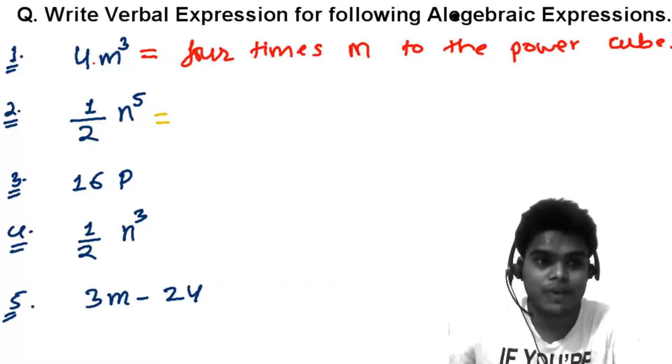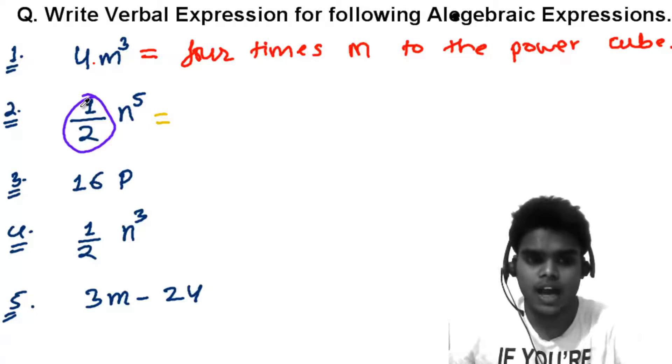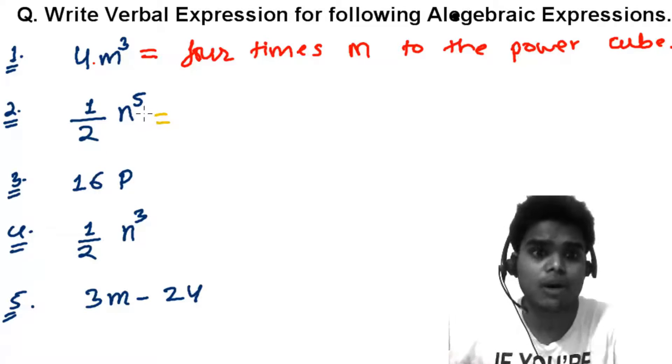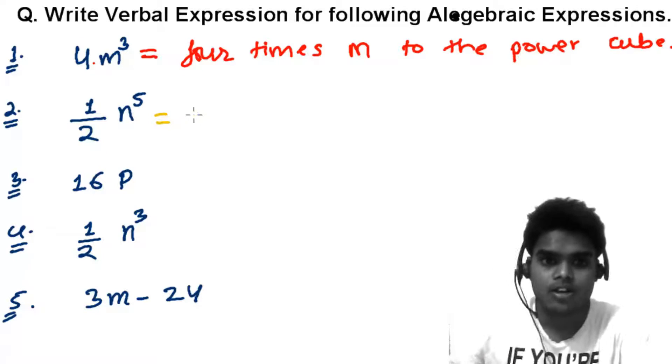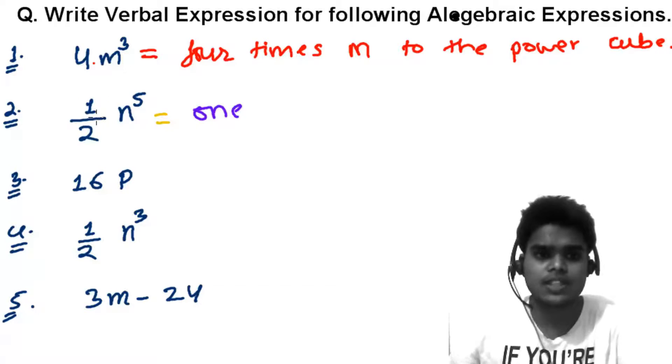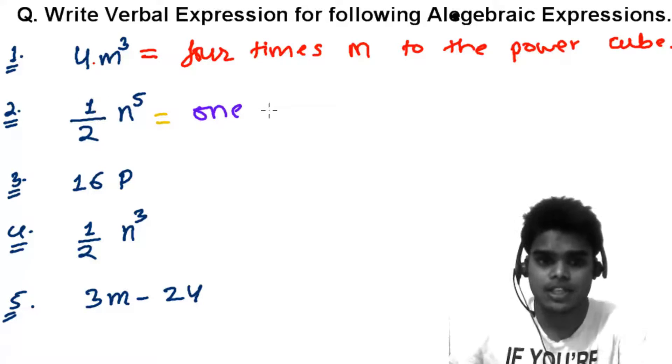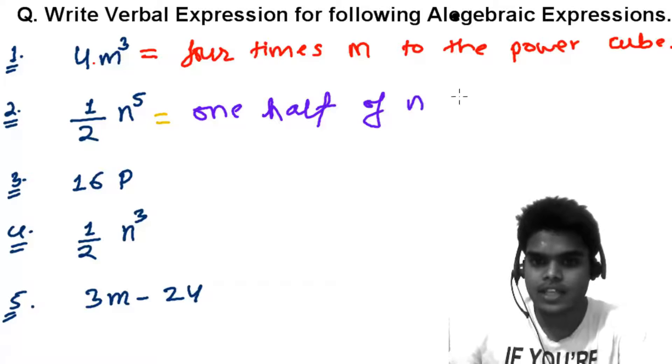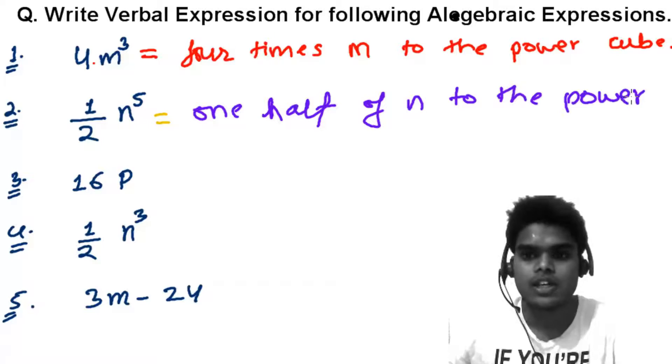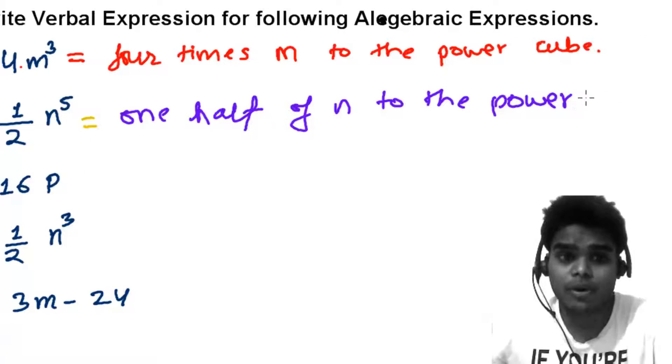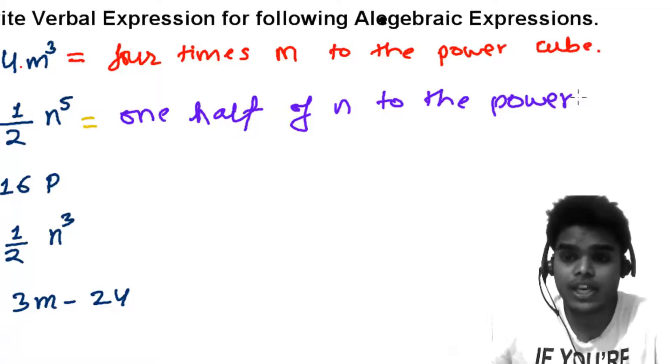Alright, so here we have another one: half n to the power 5. So you can say this as one half of n to the power 5. One because this is one half, one by two. You can just say half of n to the power 5 also. You can say one half of n to the power 5 or n to the fifth power. You can say both, n to the power 5.